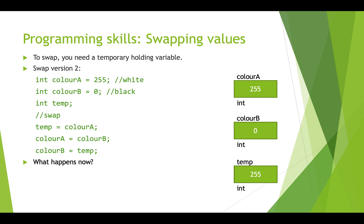First we copy what was in colorA — the 255 — into temp. Then we copy what was in colorB into colorA, so zero gets copied into A. Finally, we copy what was in temp into colorB. Although we started with 255 and 0, they've now been swapped successfully to 0 and 255.